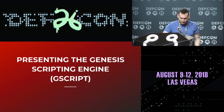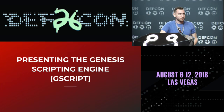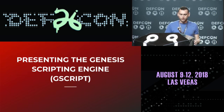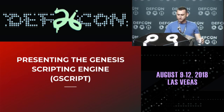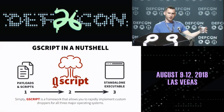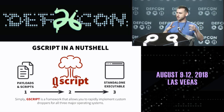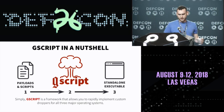As Dan said, today we are going to show the awesome information security community what we've done cumulatively over the last several years, plus some really awesome features that even if you were at CCDC you didn't get a chance to play with. I'd like to introduce the Genesis Scripting Engine, or as we call it, G script. What is G script? It's a dropper — it lets us take malware, bundle it together, and throw it at somebody.